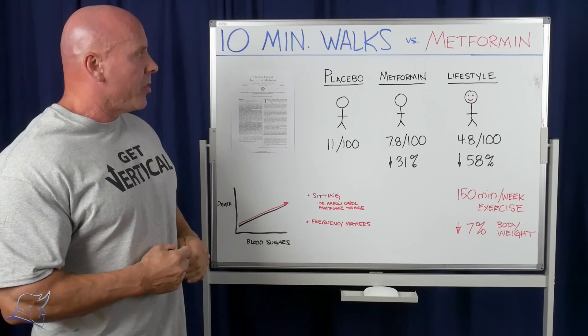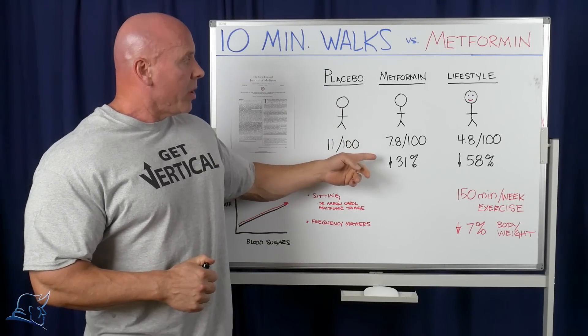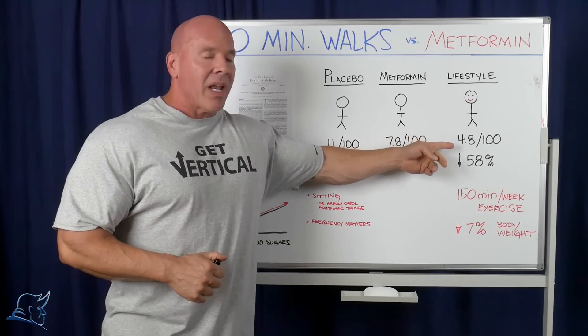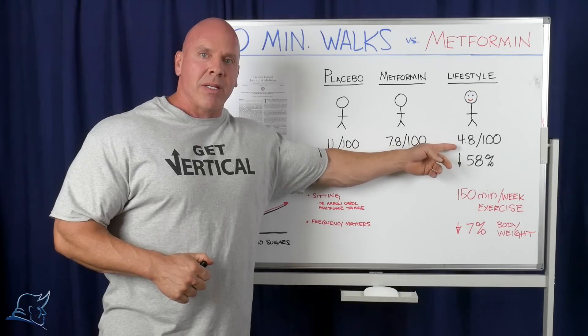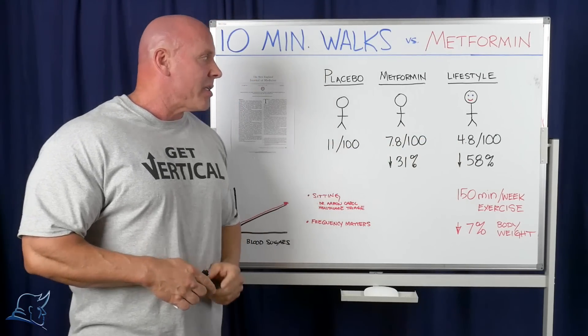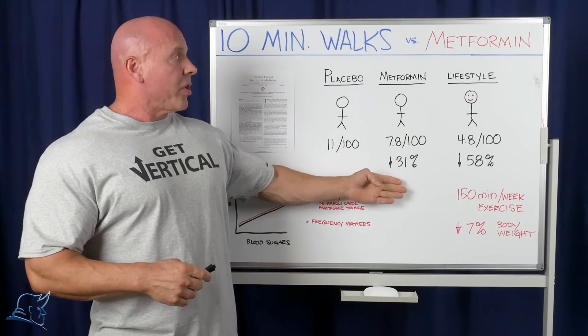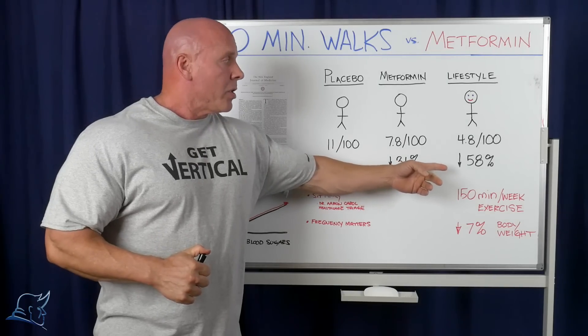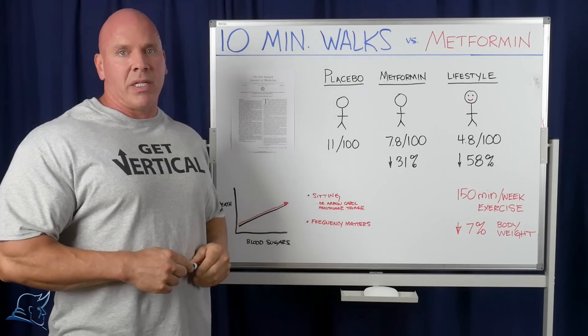The placebo group had 11 cases of diabetes out of 100 people that were studied, metformin group had 7.8, and the lifestyle group had only 4.8 incidences of diabetes out of 100. So that was a reduction of 31% in the metformin group, it was a reduction of 58% in the lifestyle group.